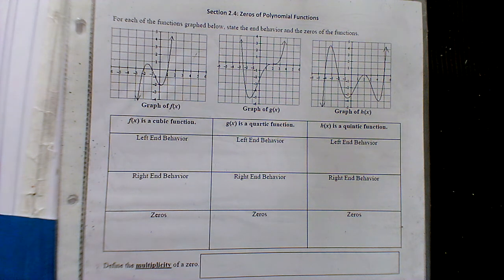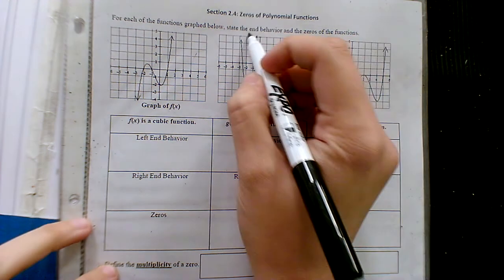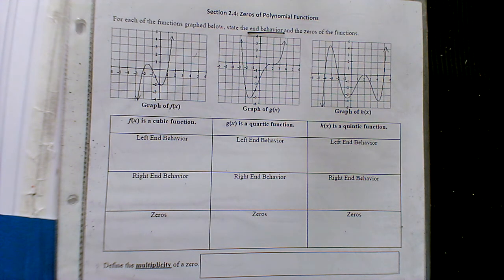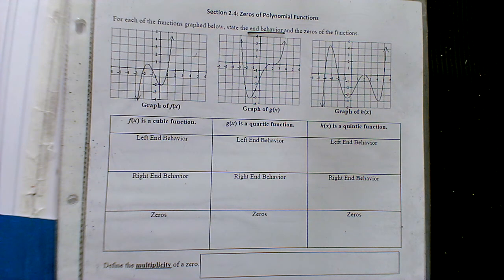We're going to try to identify what's referred to as end behavior. We're basically just looking at the ends of the graph and describing what the graph is doing. When we describe it, we're going to use mathematical language — not just saying up or down.